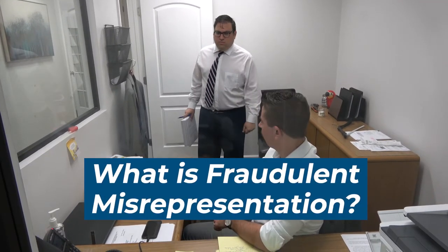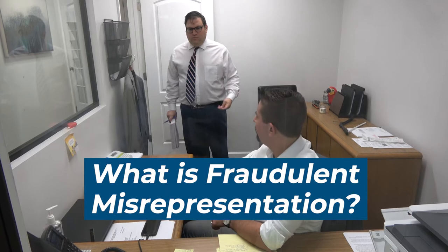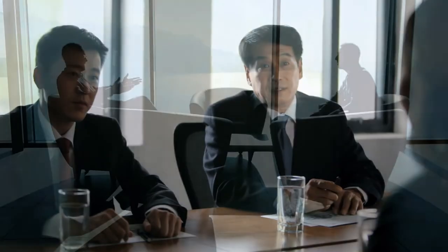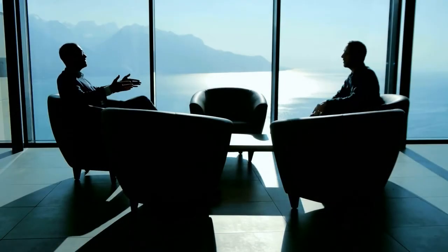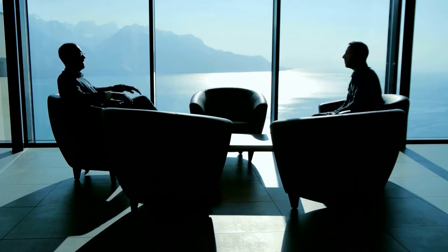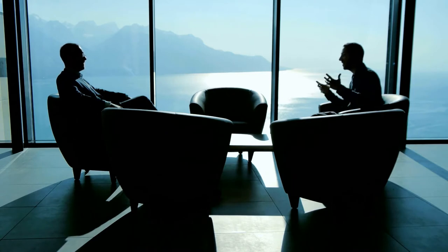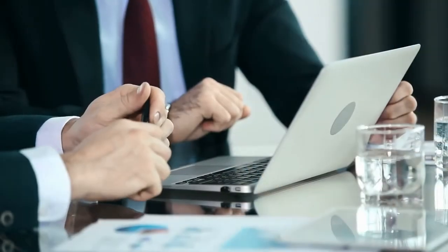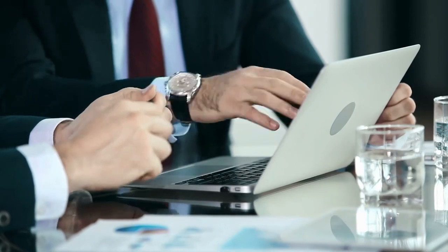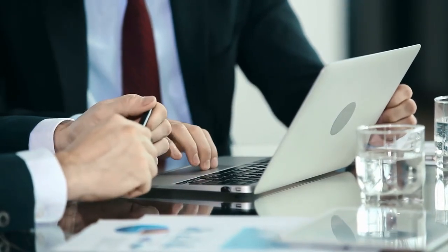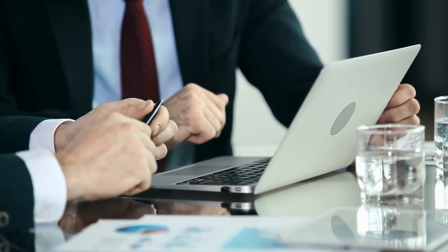What is fraudulent misrepresentation? An example of fraudulent misrepresentation is when one party is negotiating with another party to enter into a contract to buy a business, but party number one says things that are not true to party number two in an effort to get party number two to enter into a contract with them to buy the business. Party number two later discovers that these things are untrue, and party number one can't perform according to the contract. Party number two would sue party number one for fraudulent misrepresentation related to the statements made before the contract was entered into.